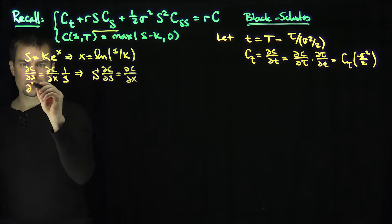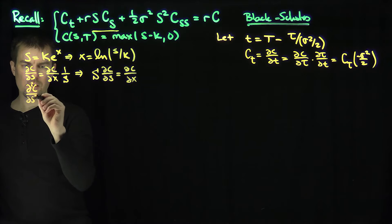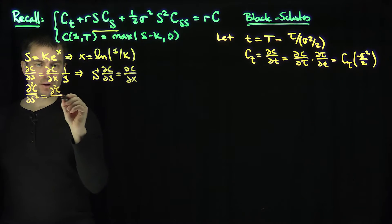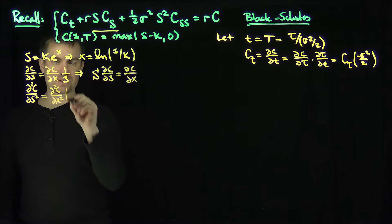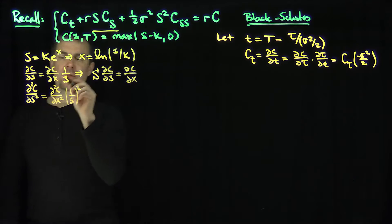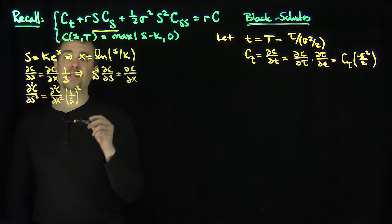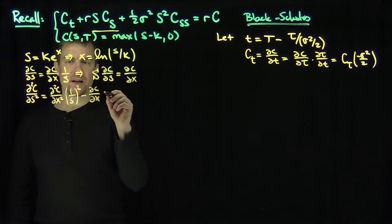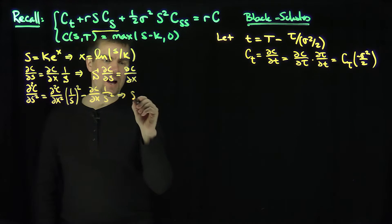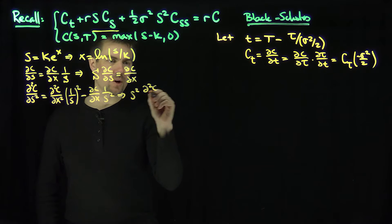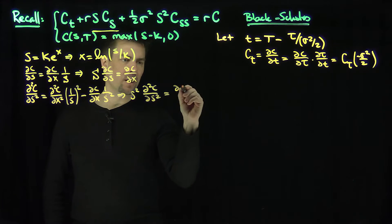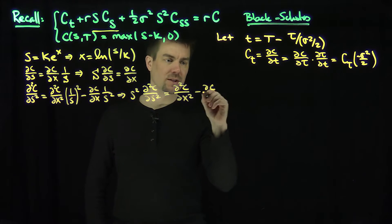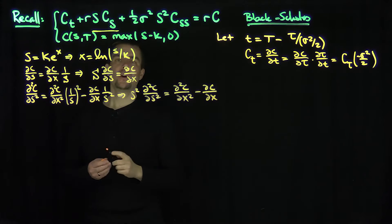Now let me do one more s derivative. For partial squared c partial s squared, it's going to be the x derivative: partial squared c partial x squared times 1 over s squared, and then the derivative of 1 over s with respect to s gives negative 1 over s squared times partial c partial x. So s squared times partial squared c partial s squared equals partial squared c partial x squared minus partial c partial x. This is the same trick used for the Cauchy-Euler equations.